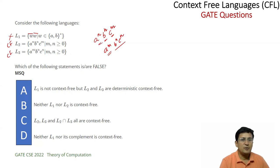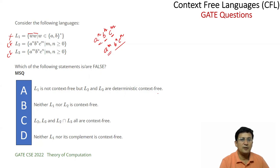The question is asking about which of the statements are false. Let us read statement one: L1 is not context-free. Yes, this is not context-free. But L2 and L3 are deterministic context-free. Yes, this is the correct one.